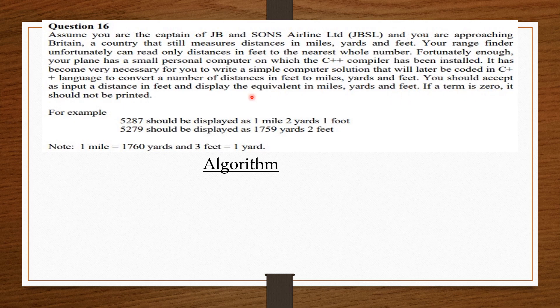You should accept as input a distance in feet and display the equivalent in miles, yards, and feet. If a term is zero, it should not be printed. Note, one mile equals 1760 yards and three feet equals one yard. The example given should be our output to the algorithm.